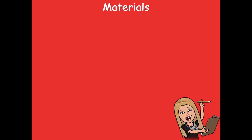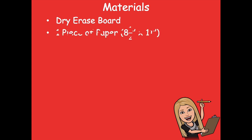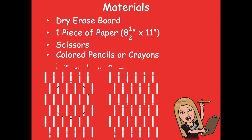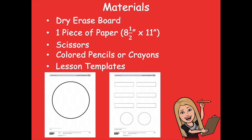The materials that you'll need for this lesson are your dry erase board, one piece of paper that's eight and a half by eleven — so just a regular sheet of paper — scissors, colored pencils or crayons, and you'll need your lesson templates. You'll need your lesson nine template from yesterday. You don't need to cut it out again or print it; you just need that circle, so make sure you save or have the circle from yesterday. And then you'll need this lesson ten template as well. Make sure you grab those before we get started.